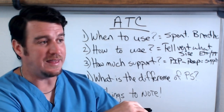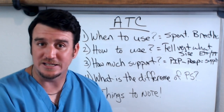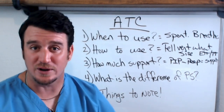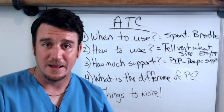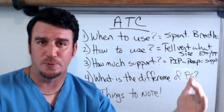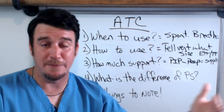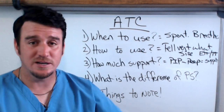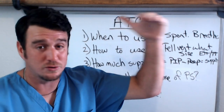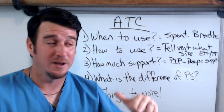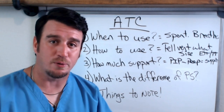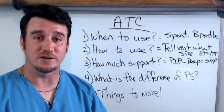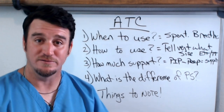Only respiratory therapists are aware of this. The doctor comes in, sees the person looking good, and wants to start trach collar trials — but we know this patient is not ready, because if you take away that AAC and only give them 8 of pressure support, which is minimal support, they become tachypneic, tidal volumes become very low, and they don't tolerate it. They look good right now, but if your peak pressures were 21 and your CPAP was 5, you actually had an inspiratory pressure support of 16 being applied — a very different story from pressure support of 8 with CPAP of 5.